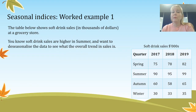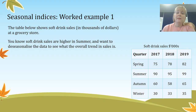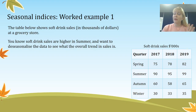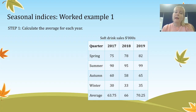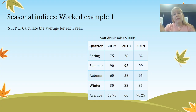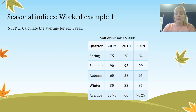Here's our first worked example — soft drink sales in thousands of dollars at a grocery store. We've got three years of data measuring spring, summer, autumn, and winter. Something very important: you won't always see the years along the top; you might have years on the bottom, so it's important to understand your data layout. Our first step is to calculate the average for each year.